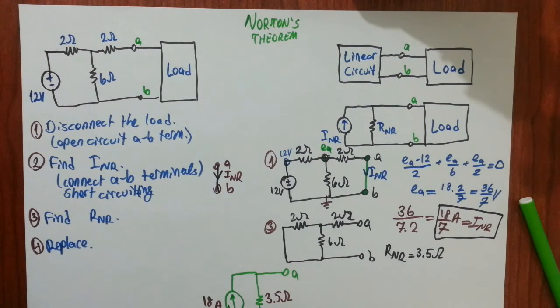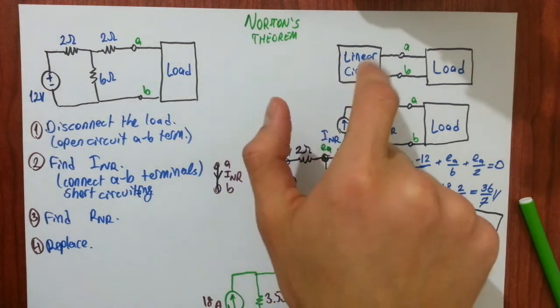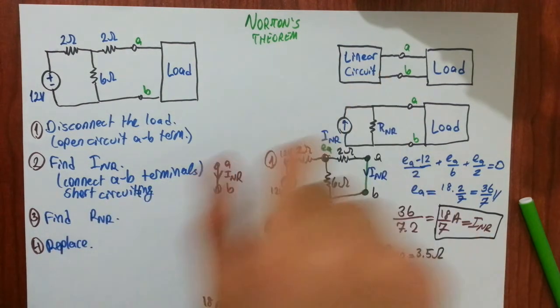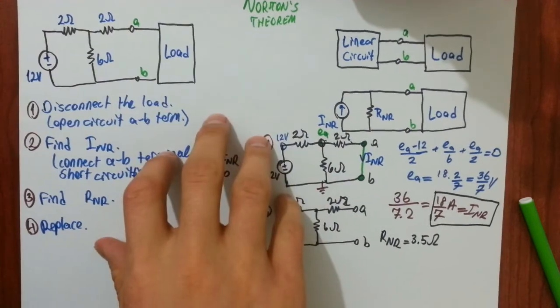Of course you can find Norton equivalent of a circuit if that circuit is linear. And that's an important point. That's all for this video.